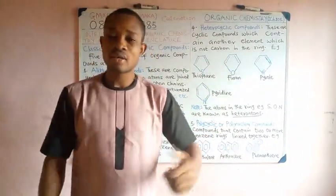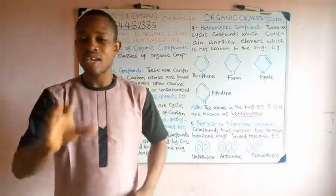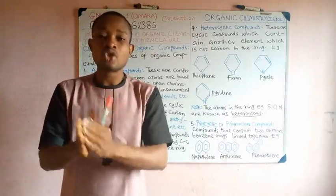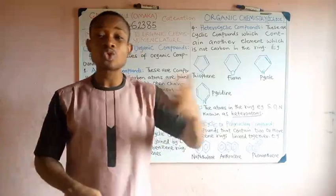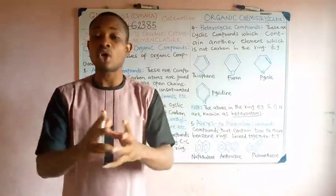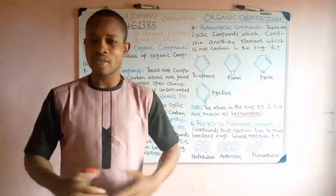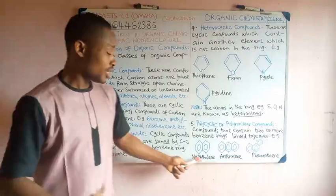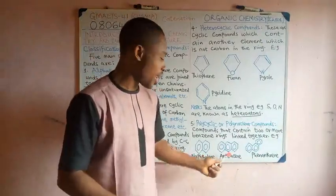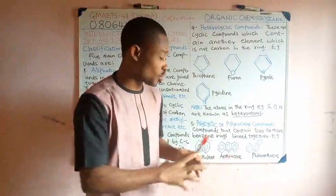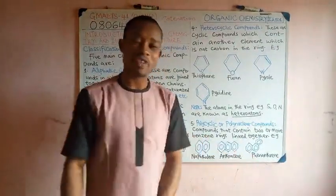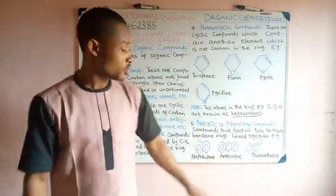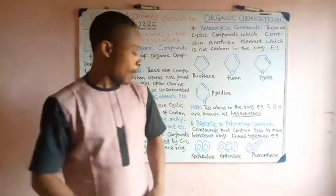Lastly, we have polycyclic, also known as polynuclear compounds. These are compounds that are formed as a result of benzene rings joined or linked together. You can have two or more benzene rings joined together. We refer to them as polycyclic or polynuclear compounds. Examples include naphthalene, you can see two benzene rings joined. We have anthracene, three benzene rings joined straight ahead. And then we have phenanthrene, still three benzene rings, but look at where the third benzene ring is placed, so you can differentiate it from anthracene.